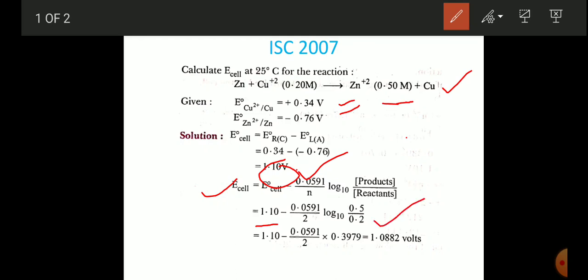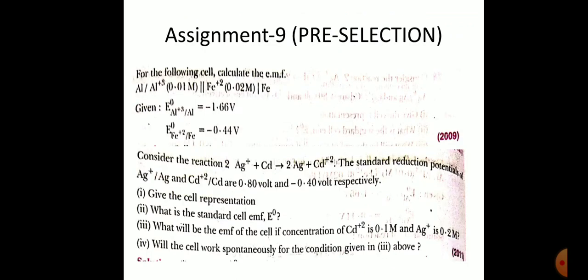Now we'll put the values and simplify. When you simplify, you'll get the value as 1.088 volts. This numerical has come in ISC 2009 and ISC 2011.